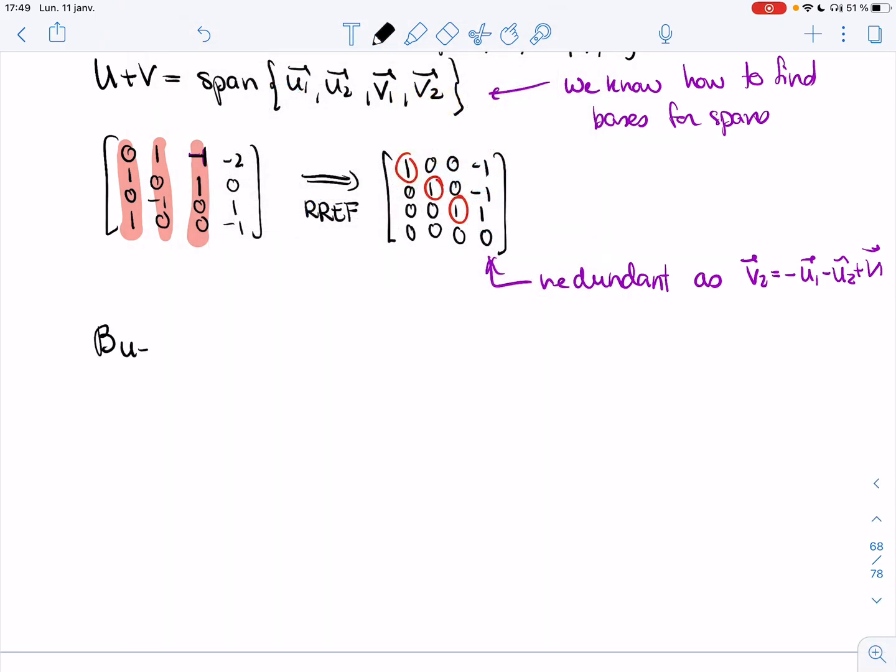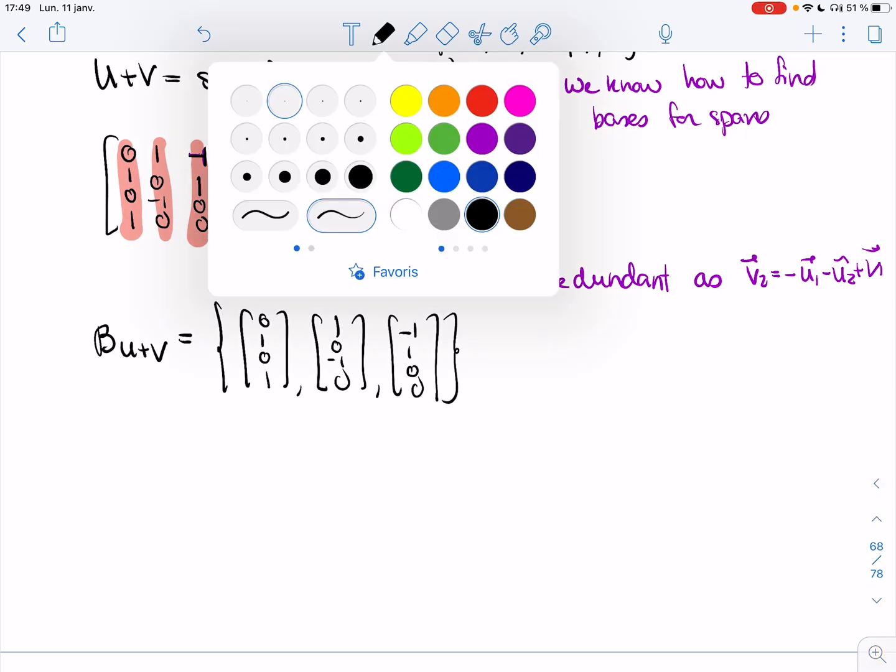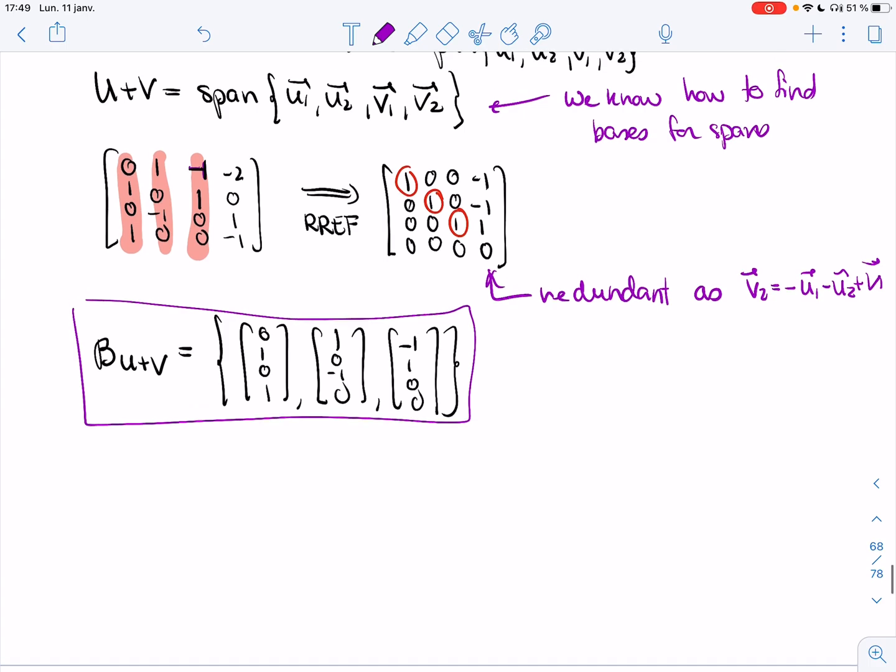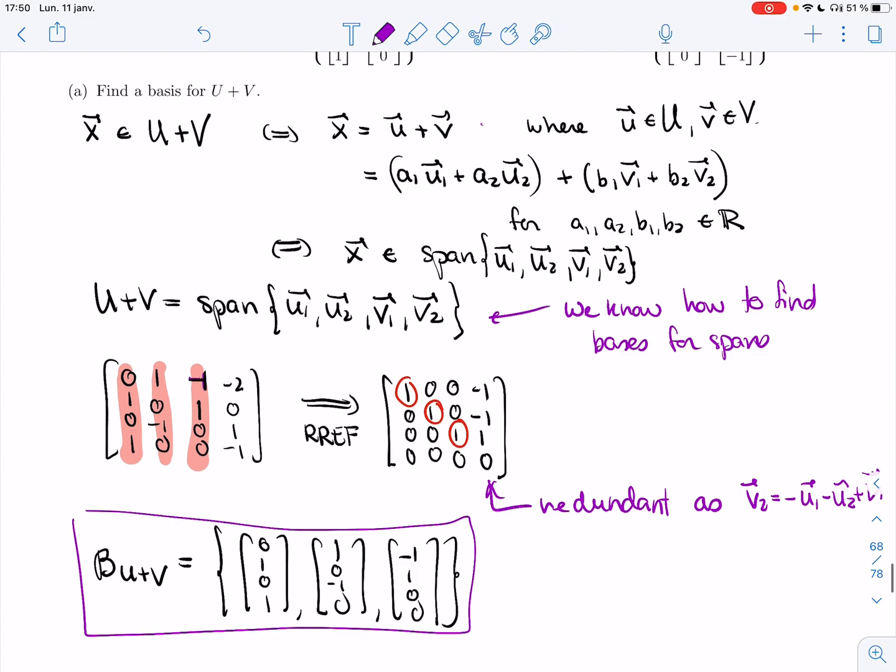So the basis for U plus V would be the set with the first three vectors. That's our basis. So that wasn't so bad. Let's stop this video here and we'll do part B next. This is a bit longer.